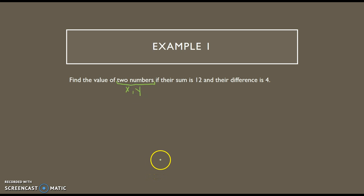Okay, the next step is to write your equations. So I know that the sum of these two numbers is 12. Well, sum means addition, so I can say x plus y equals 12, and their difference is 4. Difference is subtraction, so I can say x minus y equals 4.